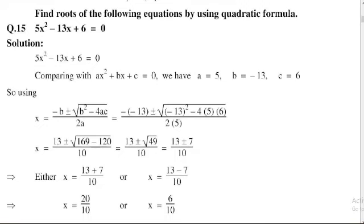The coefficient of x² is equal to 5, it means a = 5, and coefficient of x is equal to minus 13, b = -13, next constant c = 6.